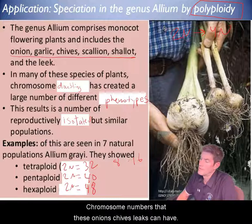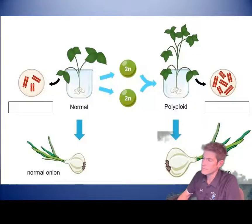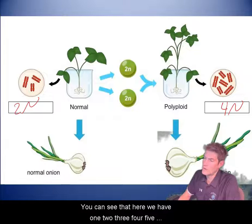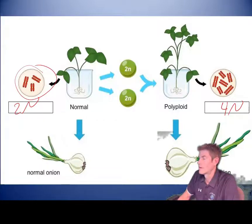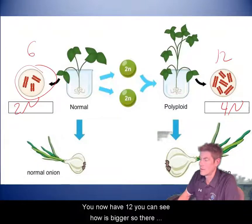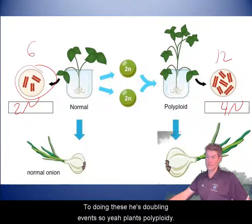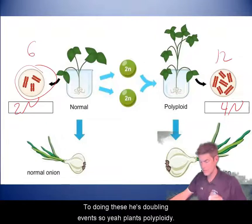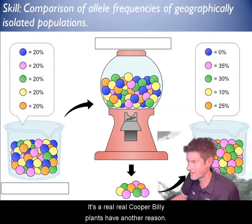These are all chromosome numbers that onions, chives, and leeks can have. You can see that instead of 6 chromosomes, after doubling the 2n number you now have 12 — and you can see it's bigger. There are real advantages to these doubling events. Polyploidy — don't forget, just a really cool ability plants have — another reason plants are awesome.